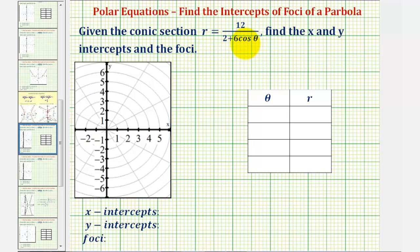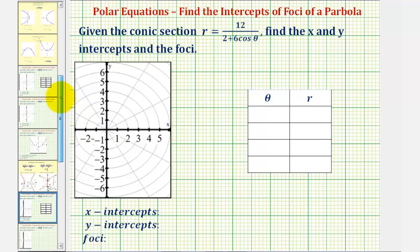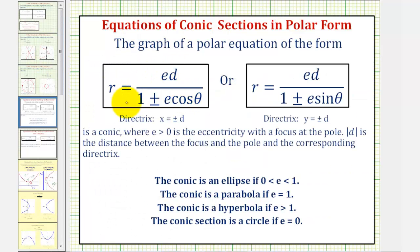Given the conic section using this polar equation, we want to find the x and y intercepts and the foci. We'll begin by determining what type of conic section we have. If we take the given polar equation and write it in this form here, as our equation contains cosine theta, we'll have a conic section where e, greater than zero, is the eccentricity with a focus at the pole. So if we write the equation in this form where we have a one in the denominator, e will give us the eccentricity, which will help us determine which conic section we have.